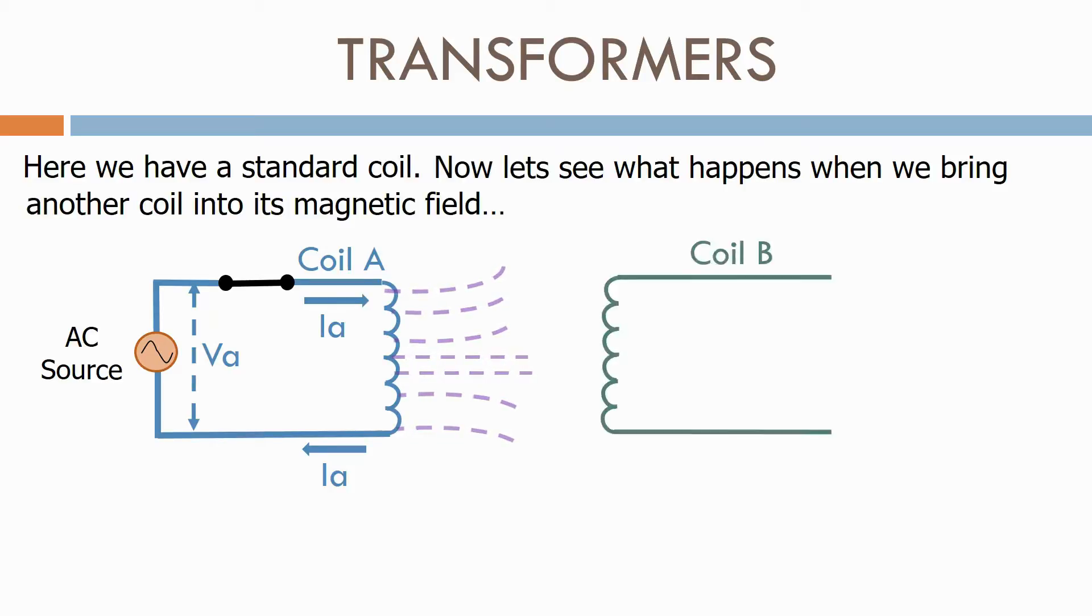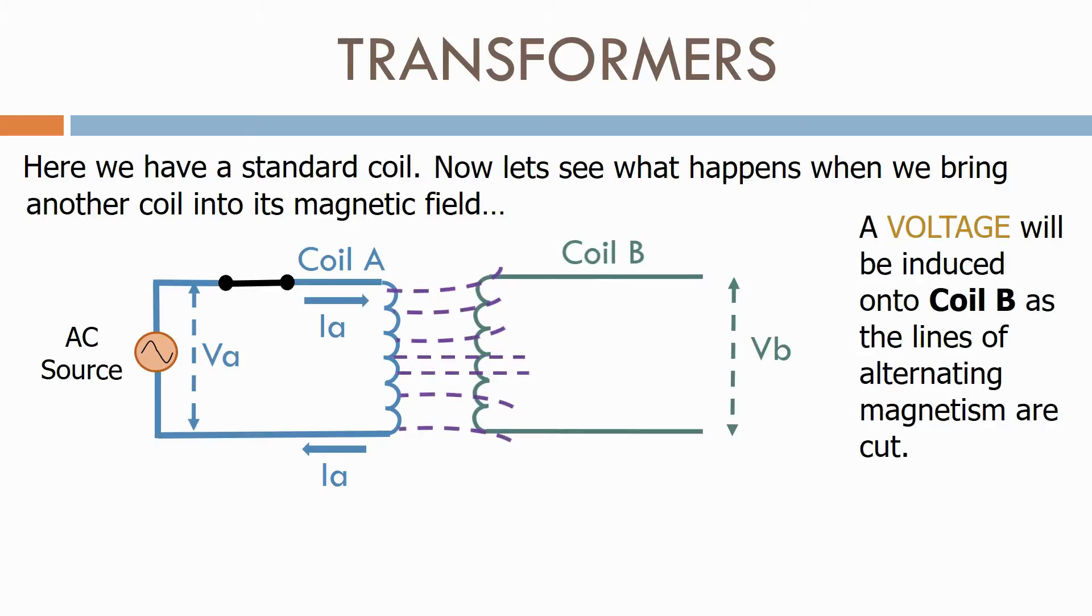Now let's see what happens when we bring another coil into its magnetic field. A voltage will be induced in coil B as the lines of alternating magnetism are cut.